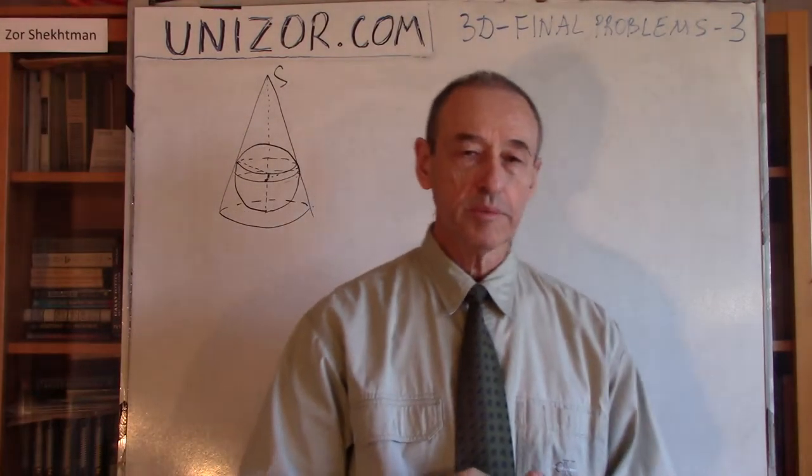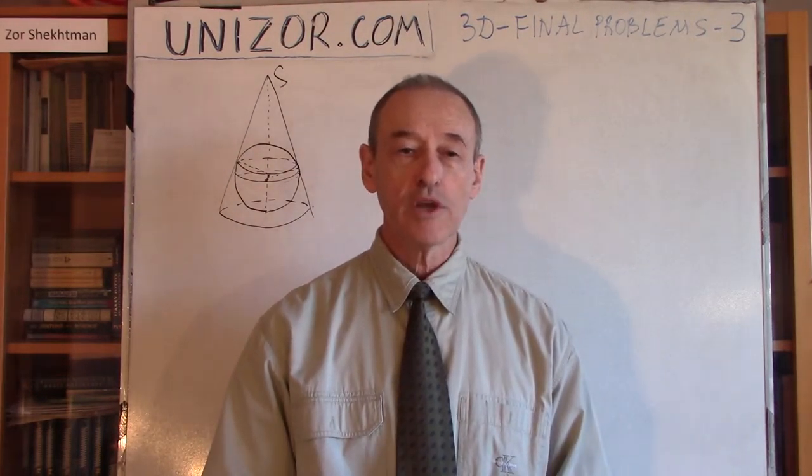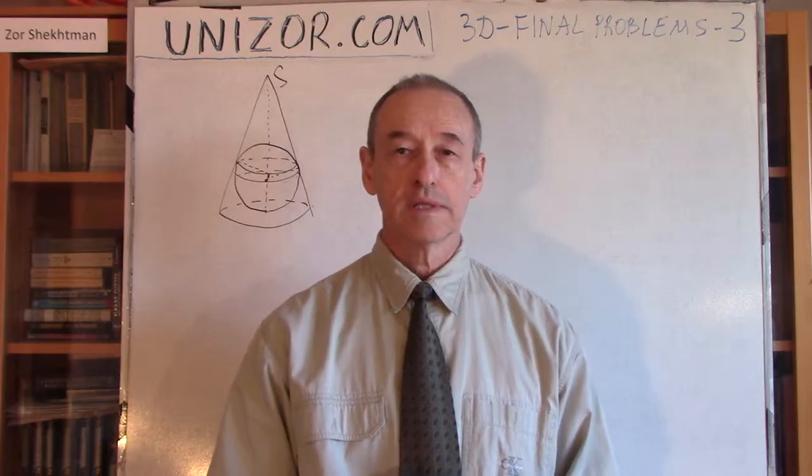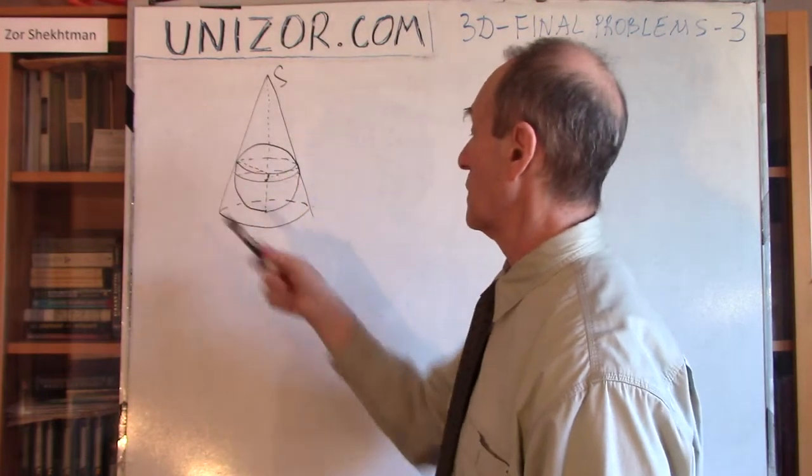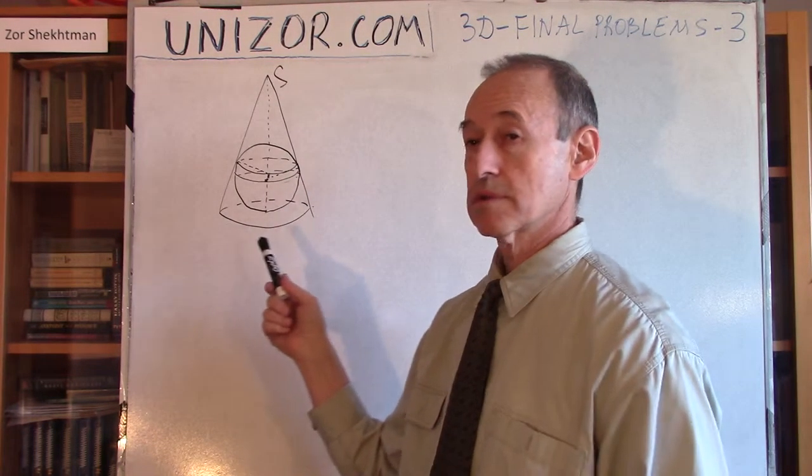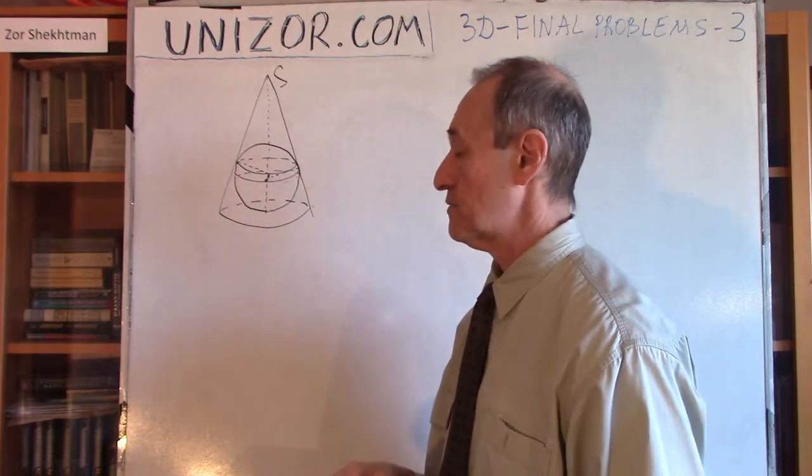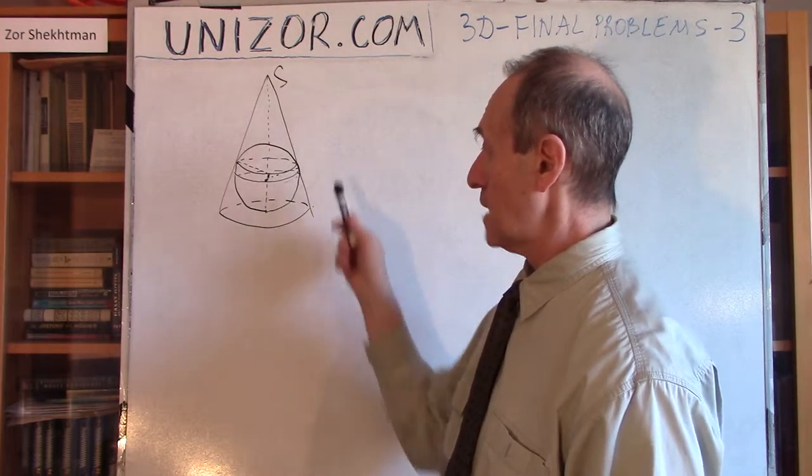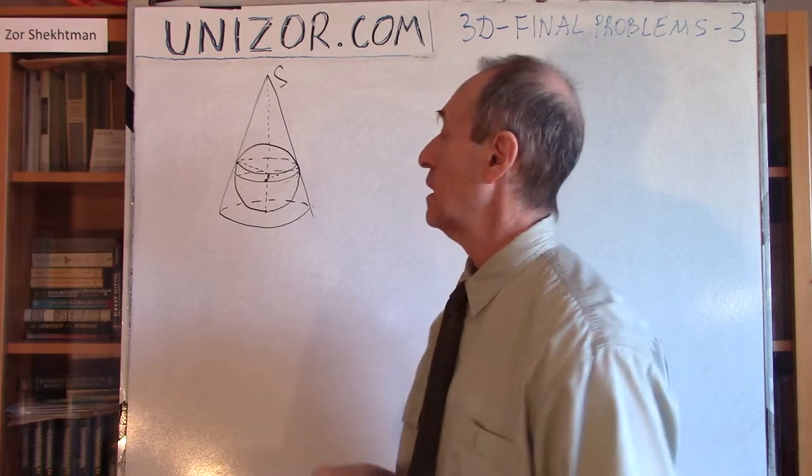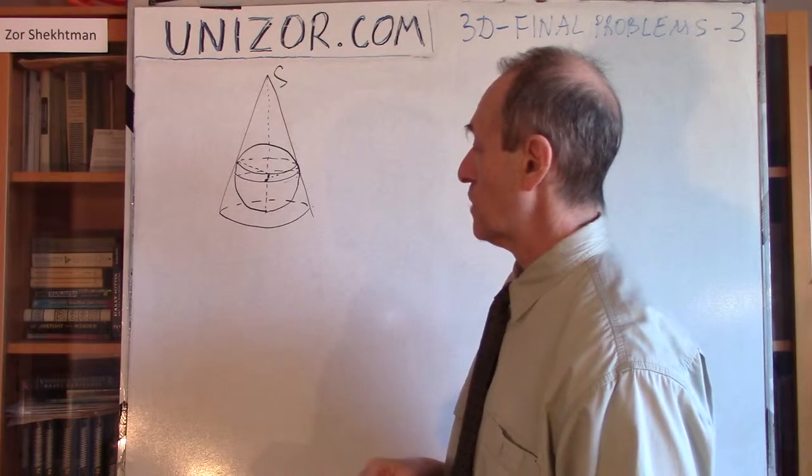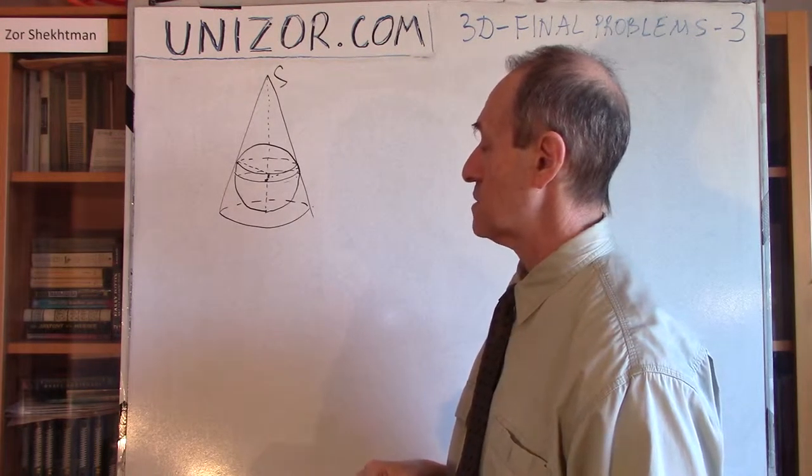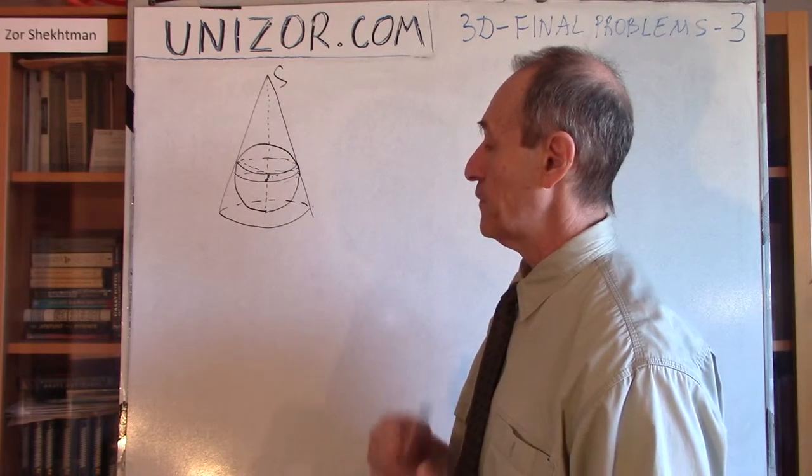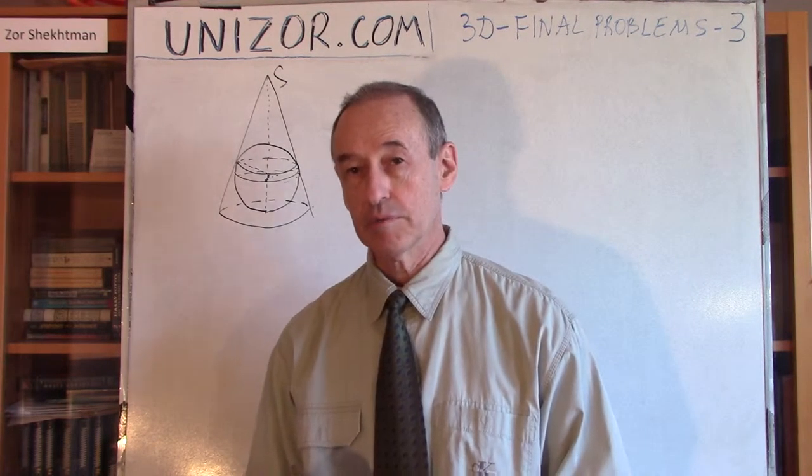The problem is: given the ratio of side surfaces, both cone and sphere - in the case of a cone, that includes the base - given this ratio of their surface area, find the ratio of the volumes.